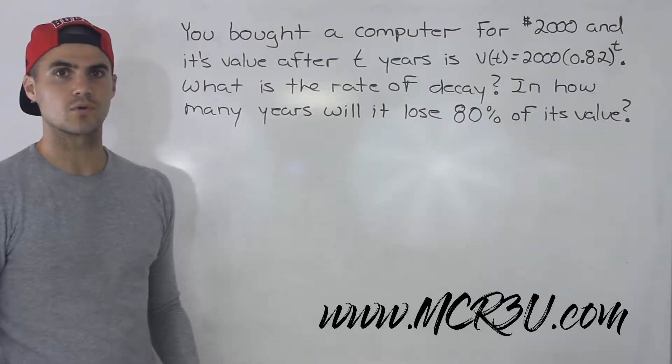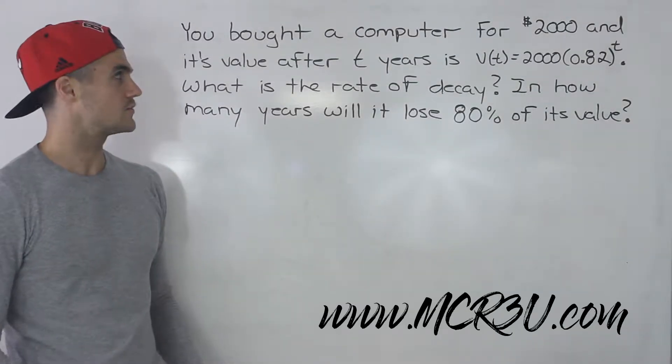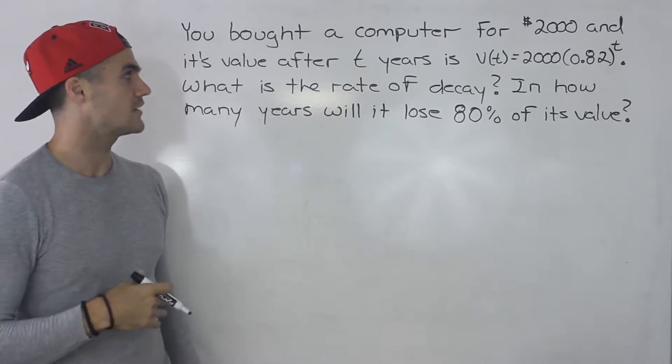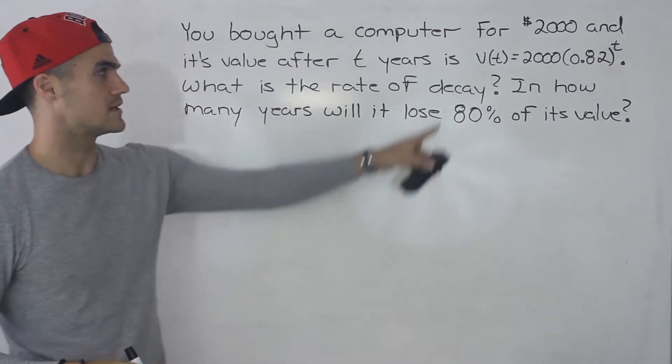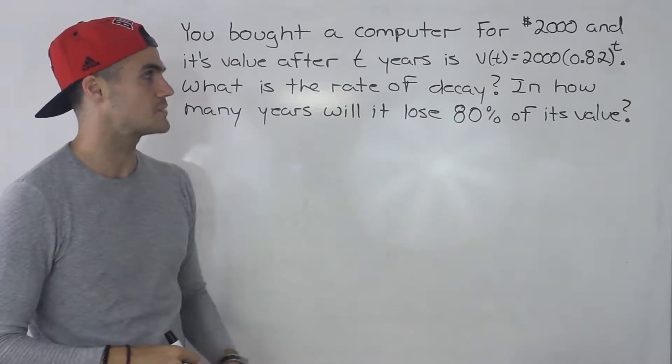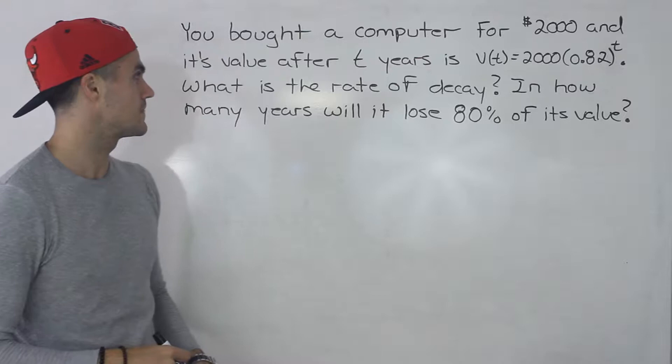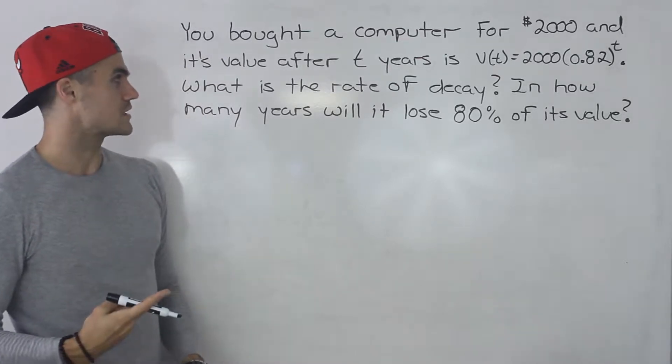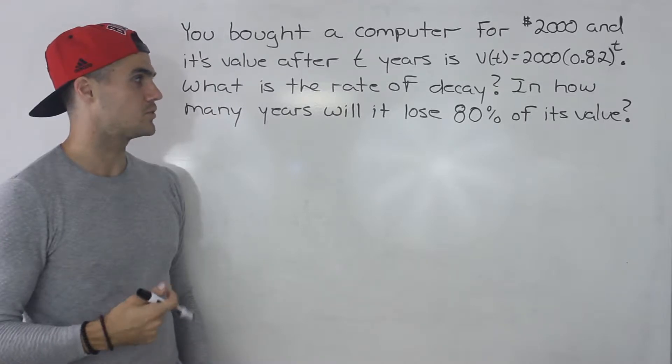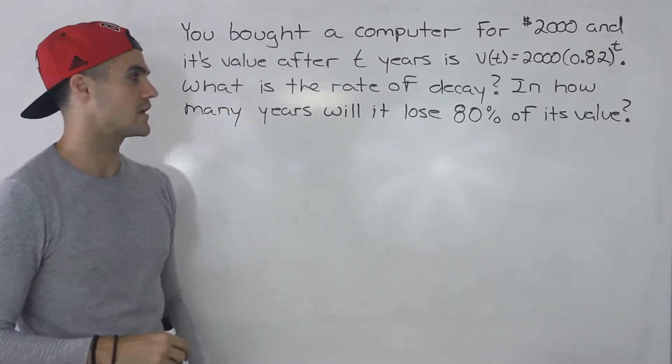Welcome back everyone. Moving on to another word problem dealing with exponential functions. So let's say you bought a computer for $2,000 and its value after t years is modeled by that function right there. So v of t is equal to 2000 times 0.82 to the power t. Two questions. What is the rate of decay and in how many years will the computer lose 80% of its value?